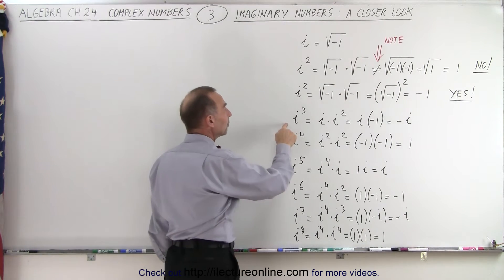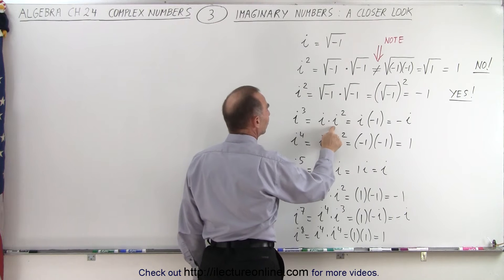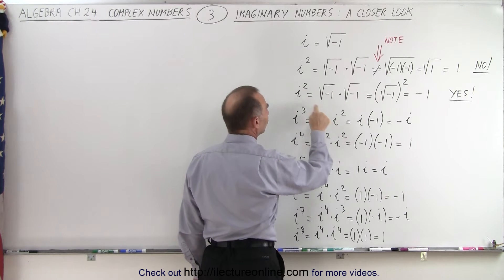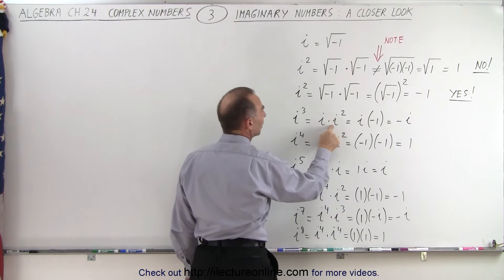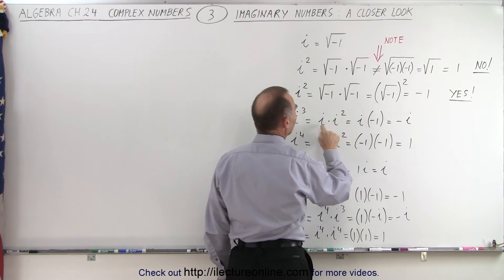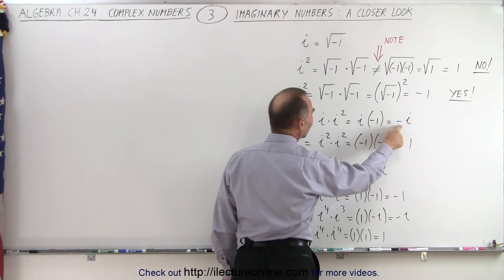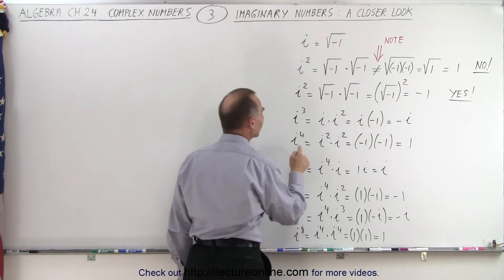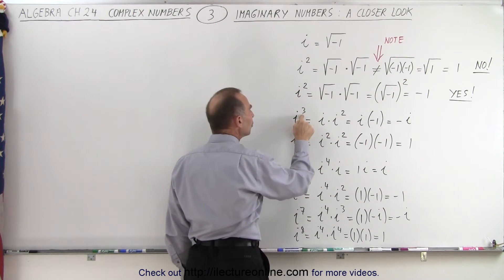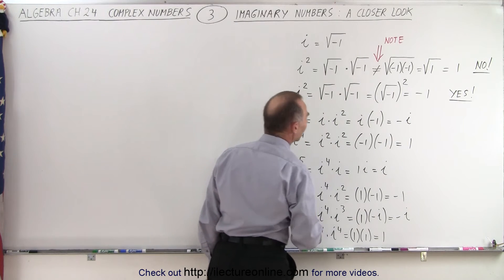i cubed can be written as the product of i times i squared. i squared is equal to negative 1, and i is simply i, so this becomes negative i. In other words, i cubed is the same as negative i.